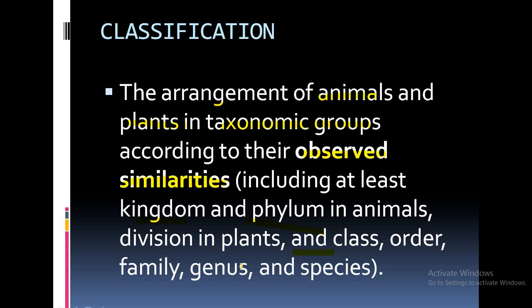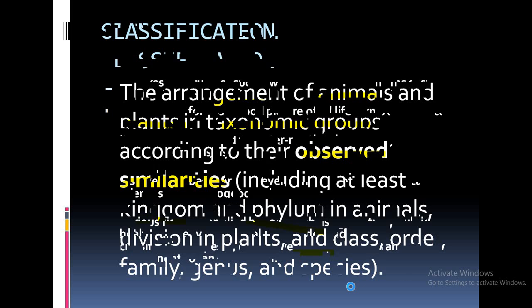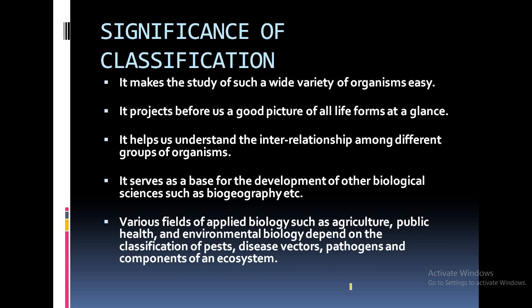In the living world, animals and plants are classified into different taxonomic groups on the basis of their observed similarities. The different levels of classification are: Kingdom, Phylum, Class, Order, Family, Genus, and Species. Now, what is the significance of classification? First, it makes the study of a wide variety of organisms easy.